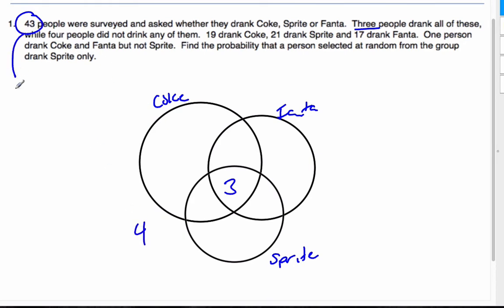So I'm dealing with, on the outside, people who drink soda will be 39 in total. Okay, so now 19 drank Coke, so that's in here. 19 drank Coke, 21 Sprite, 17 Fanta. One person drank Coke and Fanta. So now I'm starting from the out and working out. So one drank Coke and Fanta goes here, but not Sprite.